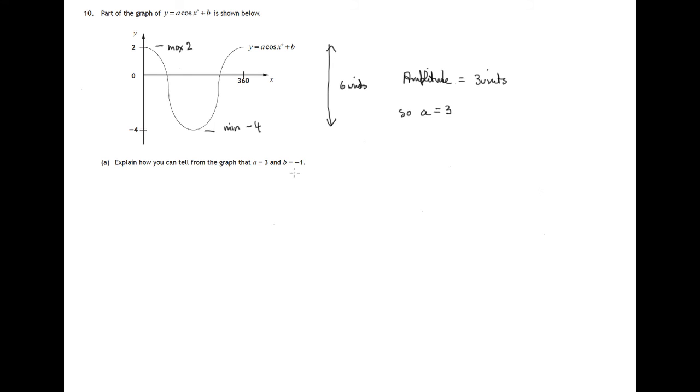So explain how you can tell from the graph that A equals 3. The amplitude is the value of A, and that equals 1 half maximum value minus minimum value. Just to complete the calculation, that's 1 half of 2 minus minus 4. It's 1 half of 6, which is 3.